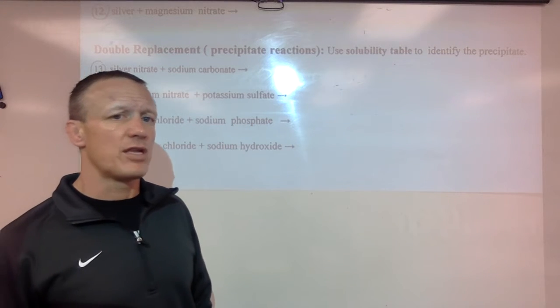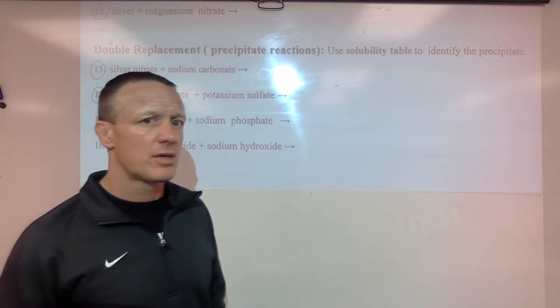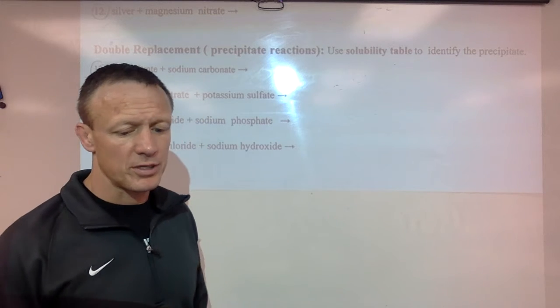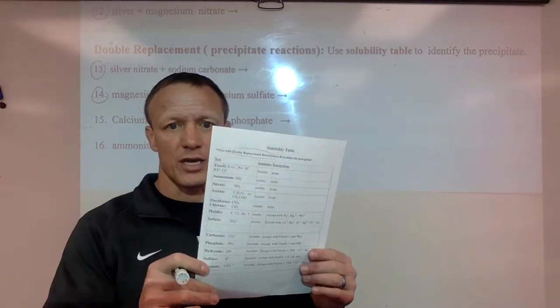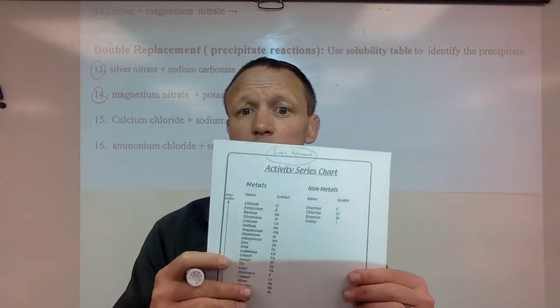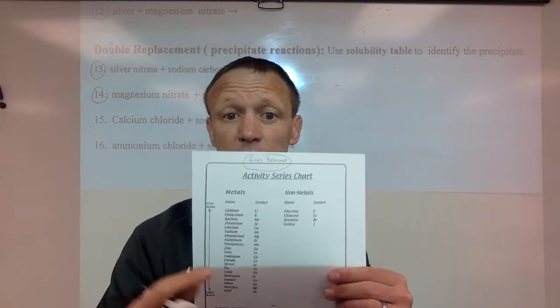This is the double replacement part of the predicting product sheet. So we'll just do double replacements here. Now that requires us to look at the other side of this. So one side has your activity series which you use for single replacements. Don't ever use this for double replacements.